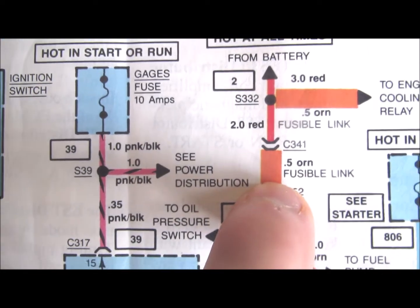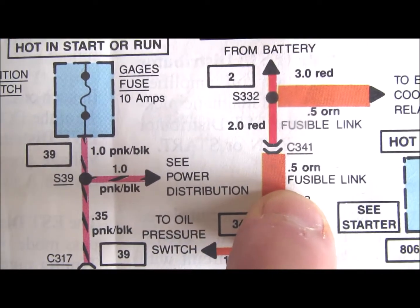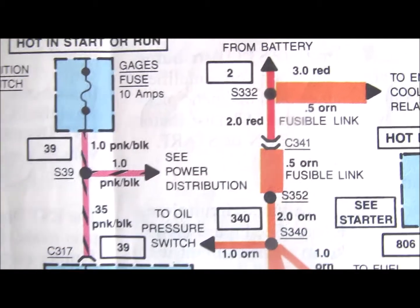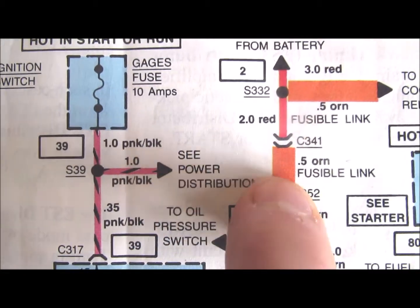And then you've got a 20 gauge orange wire. That is the fusible link. You won't see anything else. It's just a piece of wire that's a lower gauge wire.